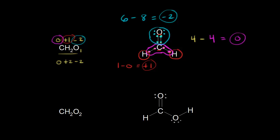Now let's do formic acid, CH₂O₂. Oxygen should be minus two, and we have two of them for a total of minus four. Hydrogen should be plus one, and we have two of them for a total of plus two. This total must add up to zero, so carbon's oxidation state should be plus two in the formic acid molecule.